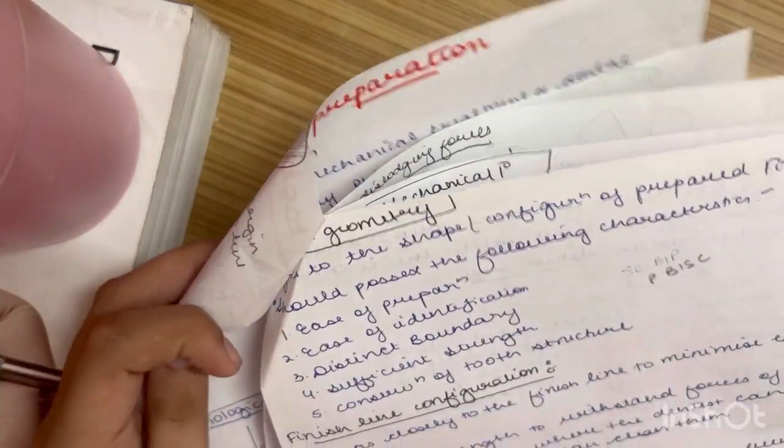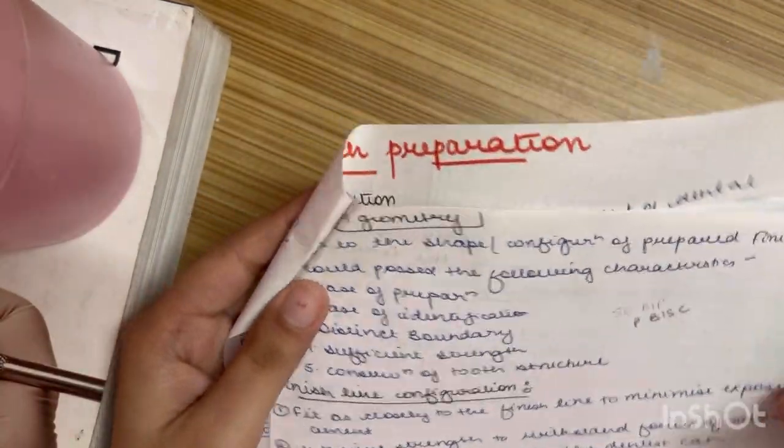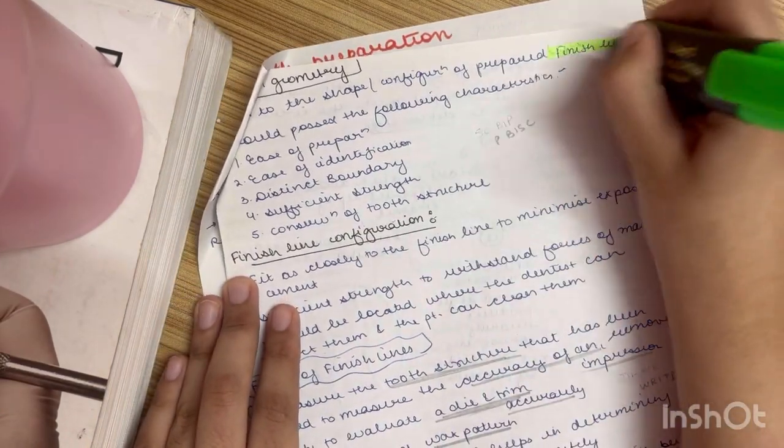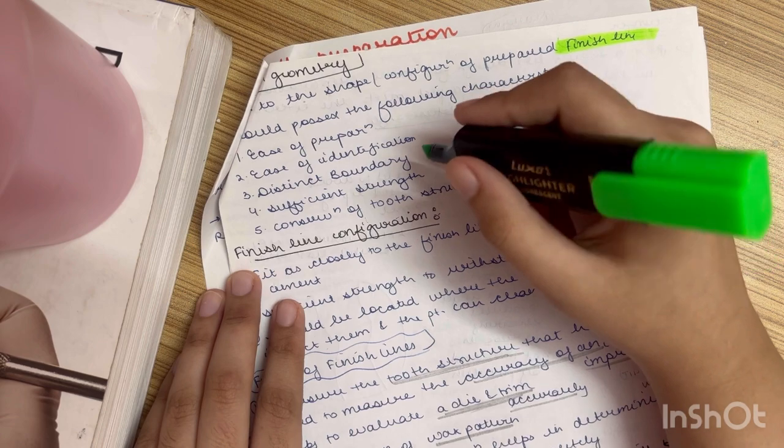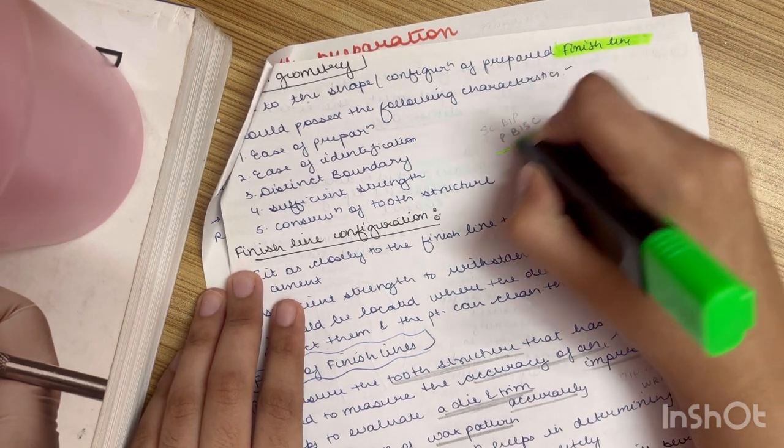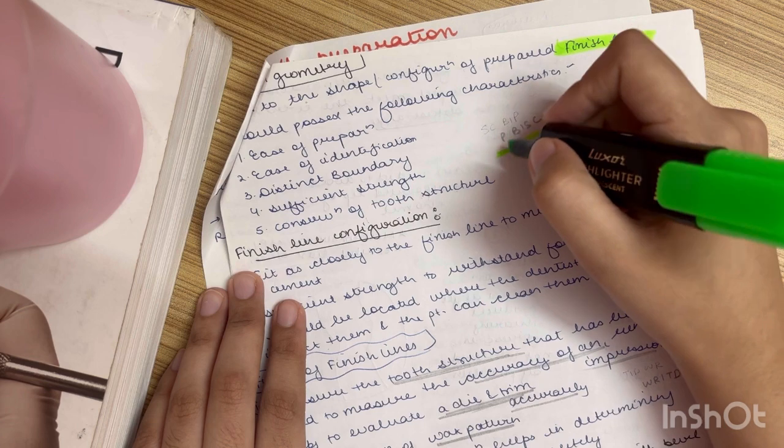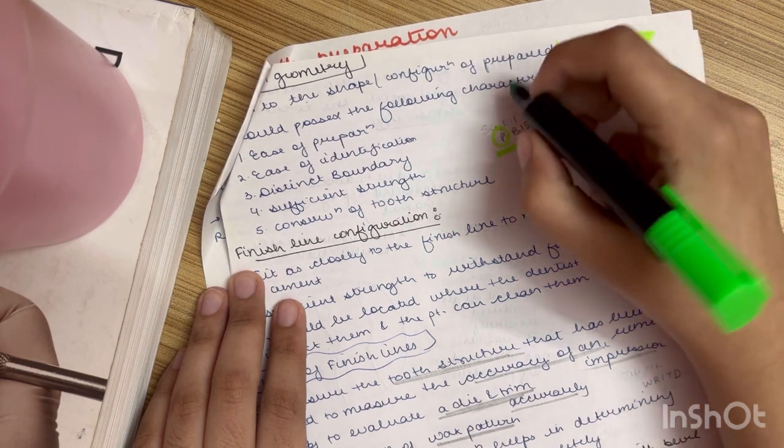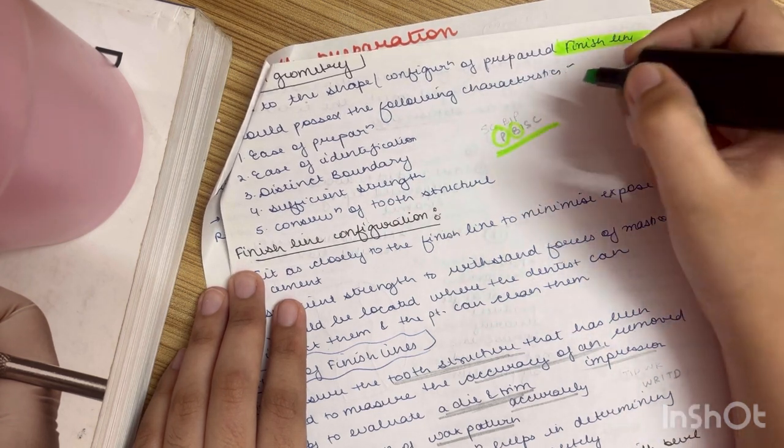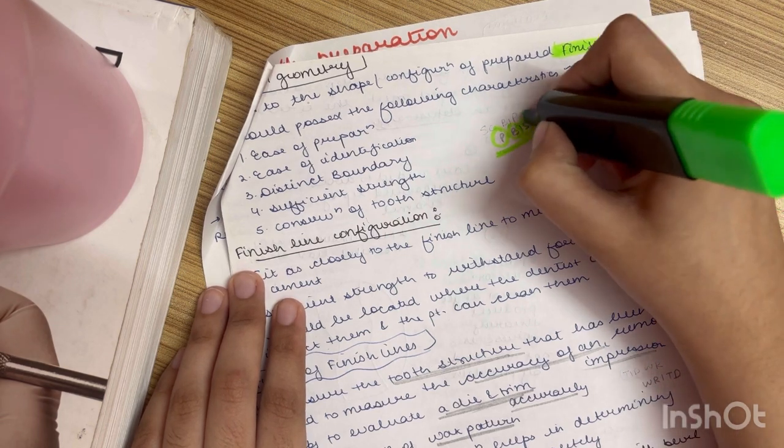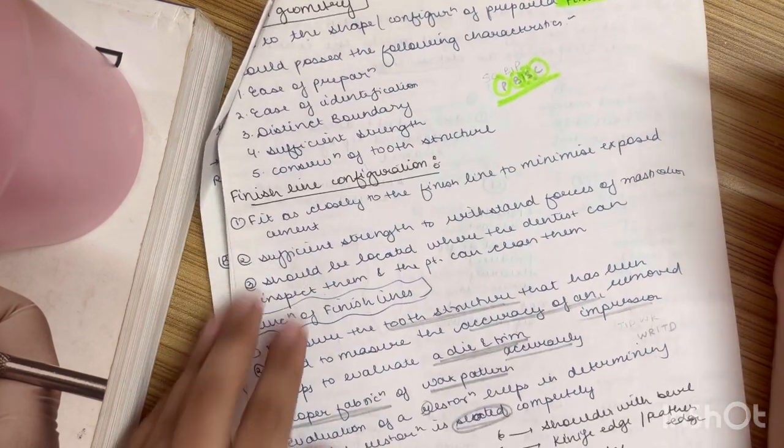In this, the geometry is basically given by finish lines. Now it should possess the following characteristics. You can remember it as PBISC. P stands for ease of preparation, B for distinct boundary, then I for ease of identification, then S for sufficient strength, C for conservation of tooth structure.